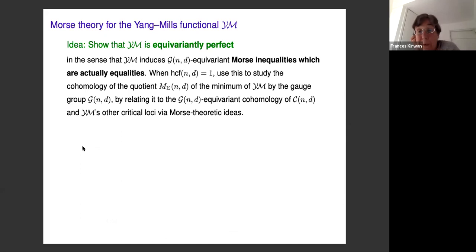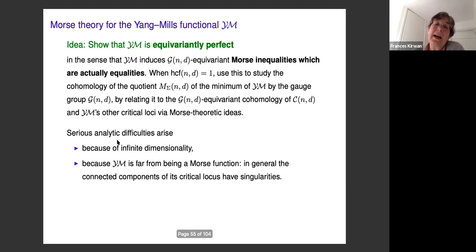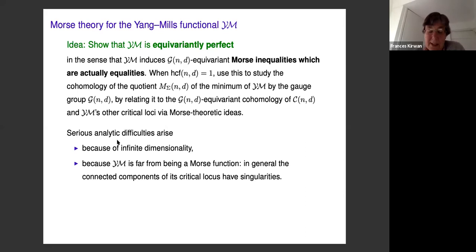The Morse stratification is defined by looking at the limiting behavior of paths of steepest descent for the Riemannian metric on this functional. In the Kähler case you take the Kähler metric. Atiyah and Bott guessed what this stratification should look like, then proved directly that it had the right properties to lead to equivariant Morse equalities. There are serious analytic difficulties partly because of infinite dimensions and because the Yang-Mills functional is very far from being a nice Morse function.